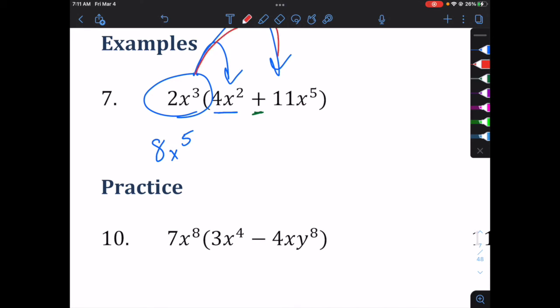Now we're going to take the 2x to the third and distribute it to the 11x to the fifth. 2 times 11 is 22. And we've got x to the third and x to the fifth makes x to the eighth.